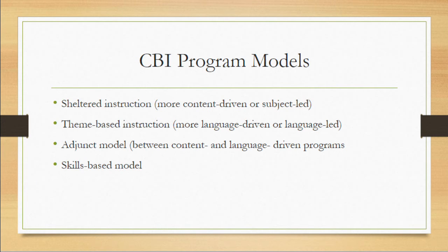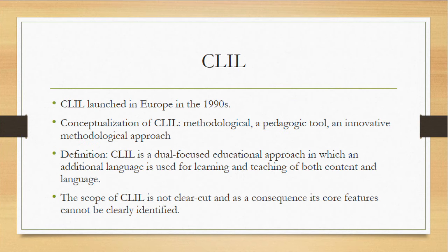CBI program models: the first is mostly content-driven — sheltered instruction. Then there is theme-based instruction, which also focuses on language but can combine many different subject types together, such as environmental science and math at the university level. An adjunct model is more of a combination, where a language class piggybacks on a separate content class, giving lower-level students opportunities to interact with more proficient speakers. There is also a skills-based model.